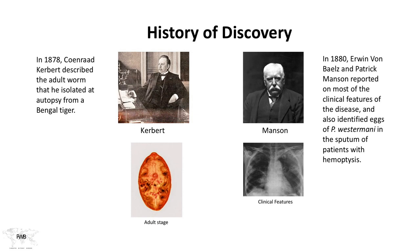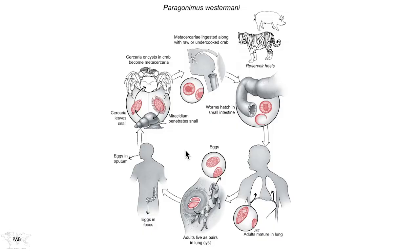Patrick Manson concentrated his efforts on describing the clinical features of Paragonomiasis. The life cycle is a typical trematode life cycle involving an invertebrate intermediate host, namely the snail, and a crustacean as the object onto which the metacercariae encyst.